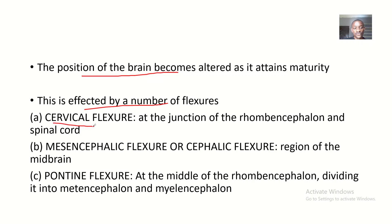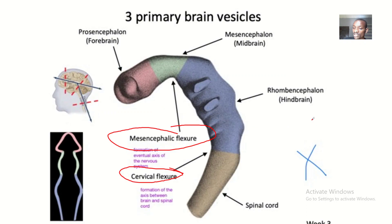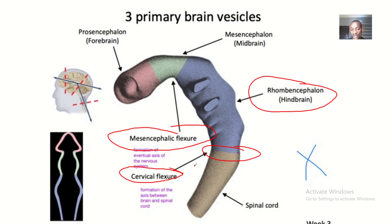We have, first of all, the cervical flexure. The cervical flexure is at the junction of the rhomboencephalon and the spinal cord. The rhomboencephalon is the hindbrain. Where the rhomboencephalon is continuing as the spinal cord, we have the cervical flexure.